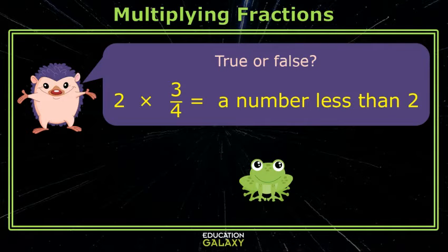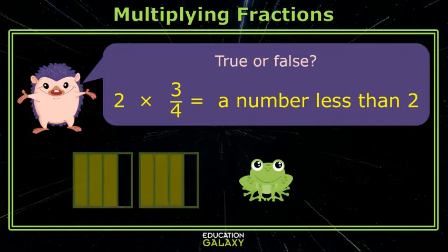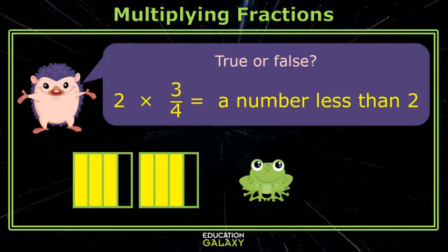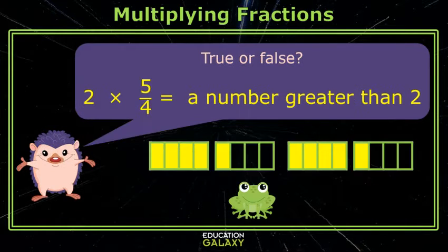True or false? 2 times 3 fourths is a number less than 2. 3 fourths is less than 1, so that's true. Good.